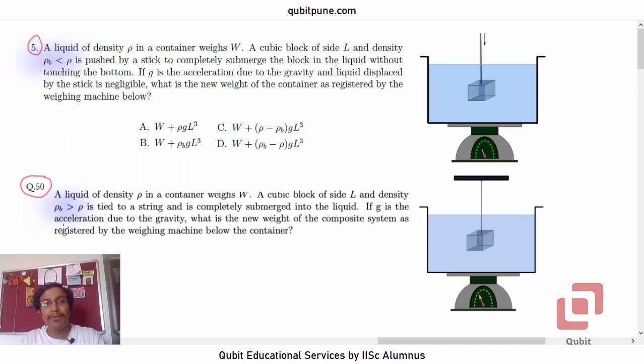Question 5: A liquid of density ρ in a container weighs W. A cubic block of side L and density ρ_B less than ρ (so ρ_B refers to density of the block) is pushed by a stick to completely submerge the block in the liquid without touching the bottom. This stick part, pushed by a stick, is indicated here. This small arrow basically indicates that the block is being held at that particular position by pushing it downwards, because the block being lighter than the liquid, there will be buoyant force pulling it upwards. If we were not pushing it by a stick, the block would have continued accelerating vertically upwards. Without touching the bottom. If g is the acceleration due to gravity and the liquid displaced by the stick is negligible, what is the new weight of the container as registered by the weighing machine below? And we have four options A, B, C, D, as usual.